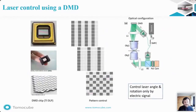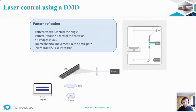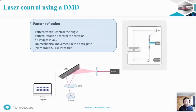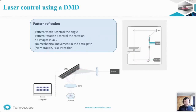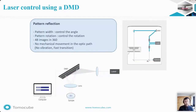This is done using a technology patented by TomoCube called the digital micromirror device, or DMD. This allows the microscope to produce CT-like images by controlling the laser angle and rotation. The DMD allows us to cover 360 degrees by taking 448 images with no mechanical movement. The absence of moving parts allows for fast imaging with high resolution.